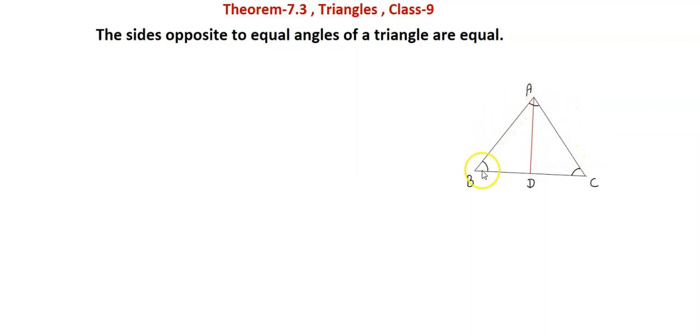In Theorem 7.3, we have to prove the sides opposite to equal angles of a triangle are equal. Here I have made triangle ABC. In this theorem, these are equal angles, like angle B and angle C are equal. The side opposite of these angles: AB is the opposite side of angle C, and AC is the opposite side of angle B. So we have to prove in triangle ABC this AB side is equal to AC. This we have to prove according to Theorem 7.3.